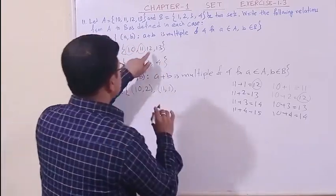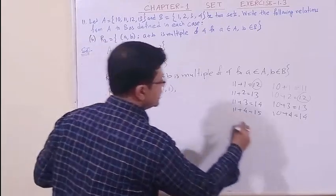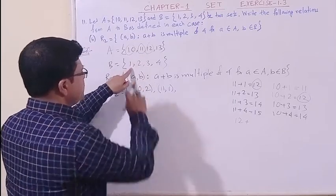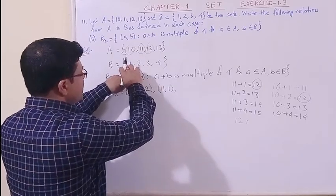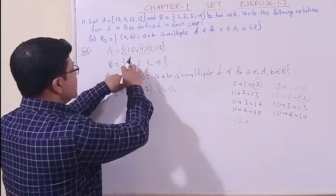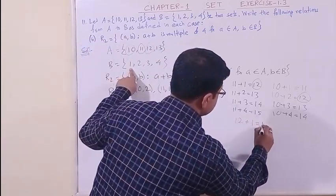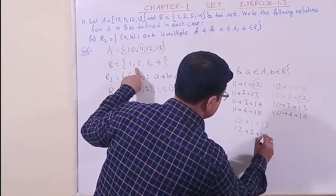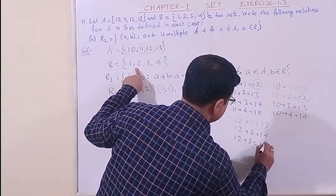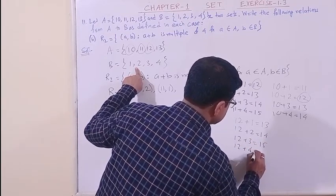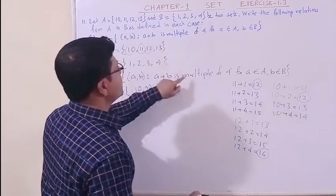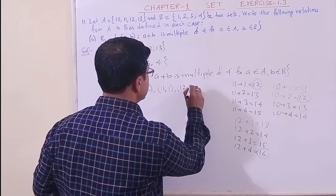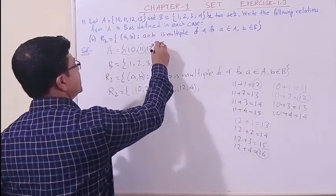12 plus 1 is 13, 12 plus 2 is 14, 12 plus 3 is 15, 12 plus 4 is 16. So this number 16 is divisible by 4. So the pair is (12, 4).